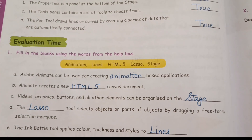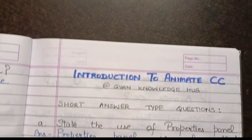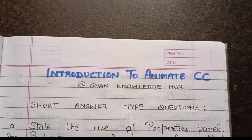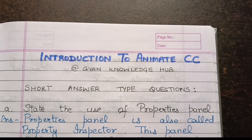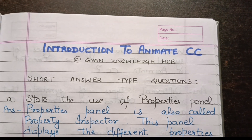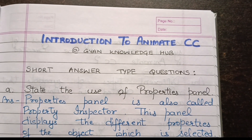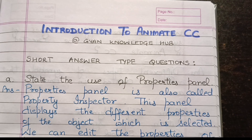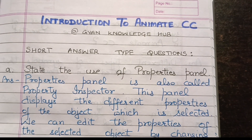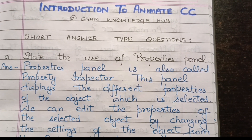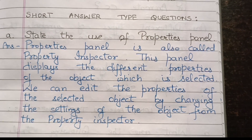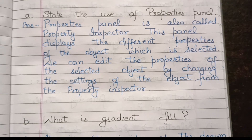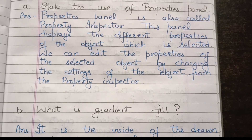Now we come to the question answers. First, short answer type questions: State the use of the Properties panel. The Properties panel is also called the Property Inspector. This panel displays the different properties of the selected object. We can edit the properties of the selected object by changing the settings from the Property Inspector.